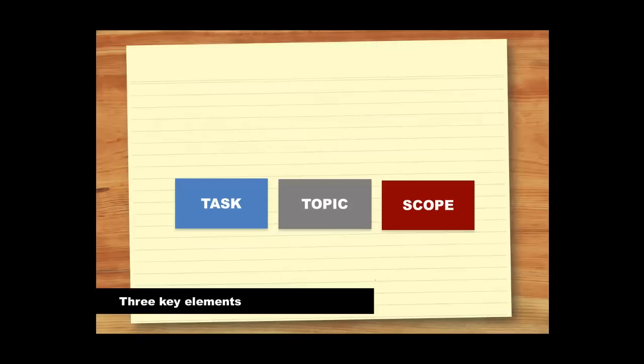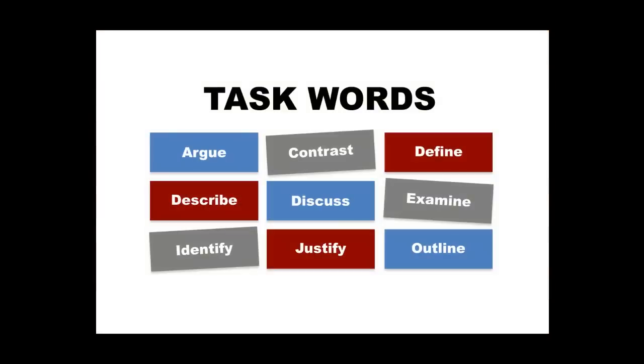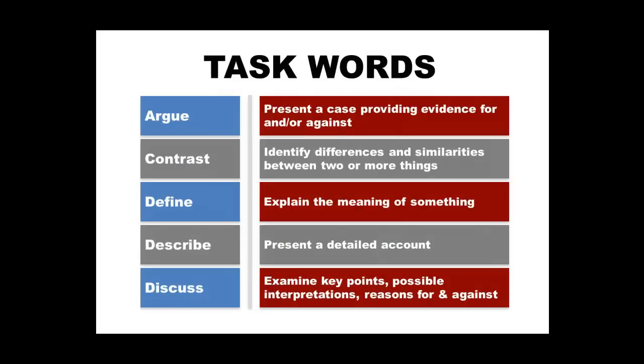So once you've identified the task, topic, and scope of the assignment, you can unpack these three elements further. Let's look at the task first. The task sets out exactly what you're being asked to do. In assignment questions, you'll often see directions such as argue, contrast, and define, and these are called task words. At university, these task words have specific meanings.